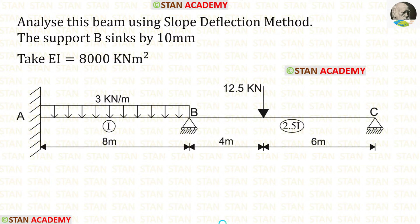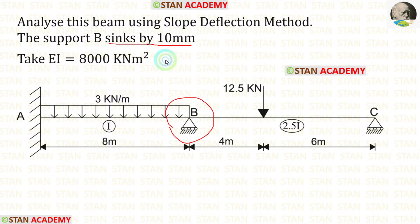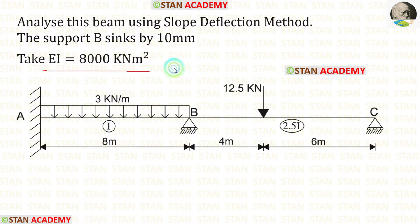Hello everyone. Today we are going to analyze this beam using the slope deflection method. In this beam, the support B sinks by 10 mm. The flexural rigidity is given as 8000 kNm². Before starting the analysis, let us see the beam one time.